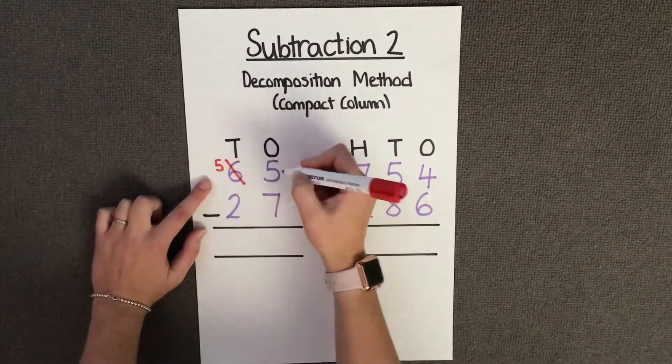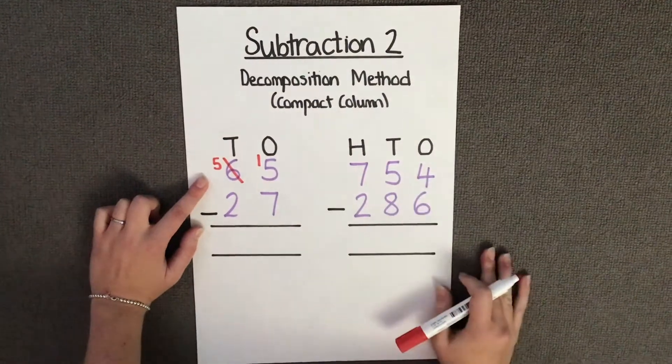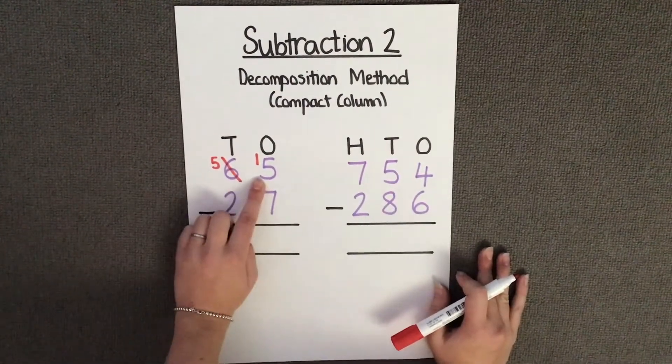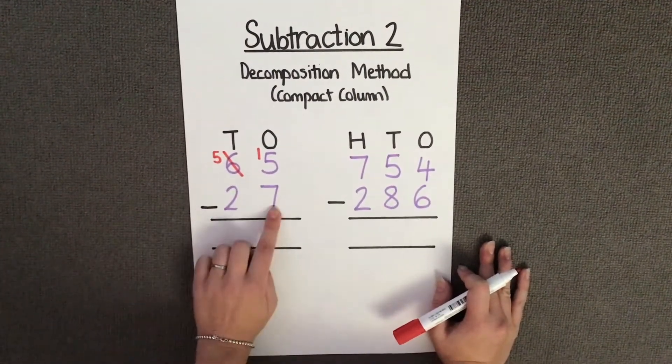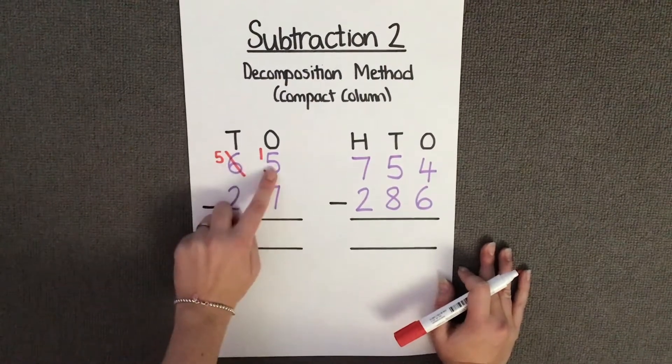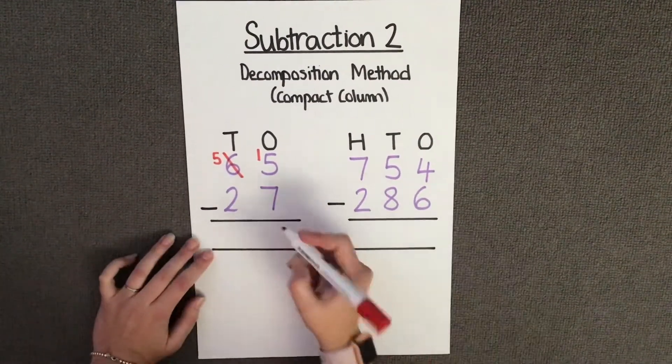And I'm going to give that lot of 10 to my ones column. Now I have 15 ones and I'm going to take away 7 ones. 15 ones take away 7 ones is 8 ones.